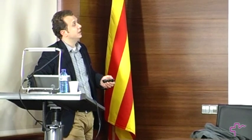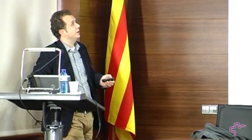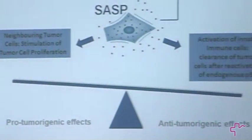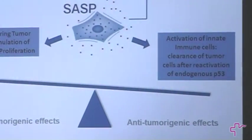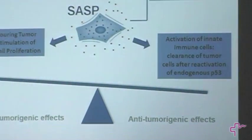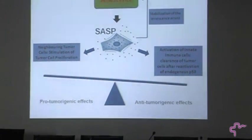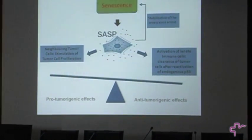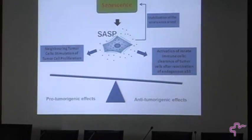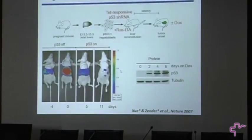Towards the end of my postdoc, we found that driving aggressive liver carcinomas into senescence evokes an immune response against these senescent tumor cells, leading to tumor cell clearance — an anti-tumorigenic effect.